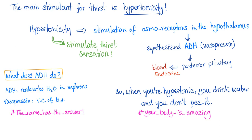This is called an endocrine process — when you secrete something into the blood. When you secrete something into the interstitial fluid around you, that's called paracrine. What does ADH do? It's antidiuretic — diuresis is loss of water in the kidney, so ADH reabsorbs water in the nephrons and prevents water from being lost in urine. It's also known as vasopressin — vaso means blood vessel, pressin means to contract. So when you are hypertonic, you drink water and don't excrete it, because we need water to decrease plasma osmolality.